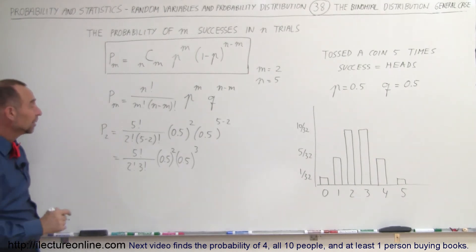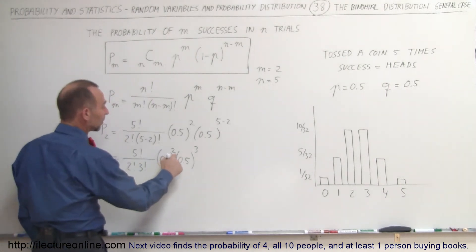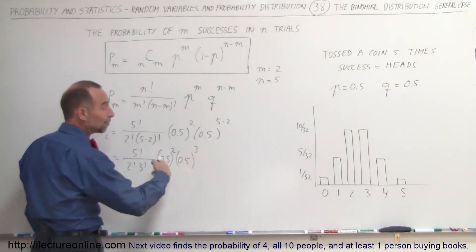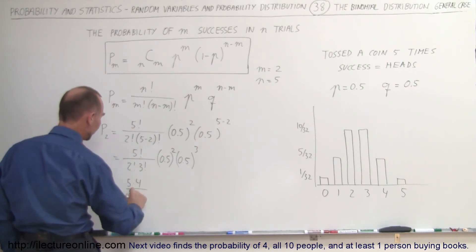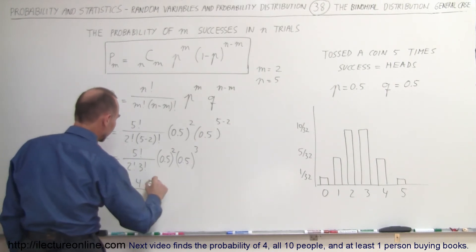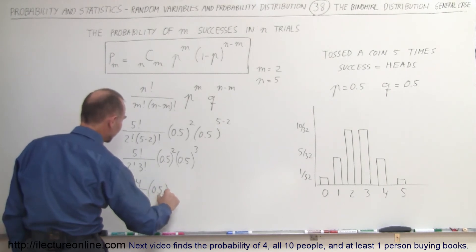We could simplify that a little bit more because 0.5 to the second power times 0.5 to the third power would be 0.5 to the fifth power. So this would equal five factorial divided by three factorial, which becomes five times four divided by two factorial which is two, times 0.5 to the fifth power.